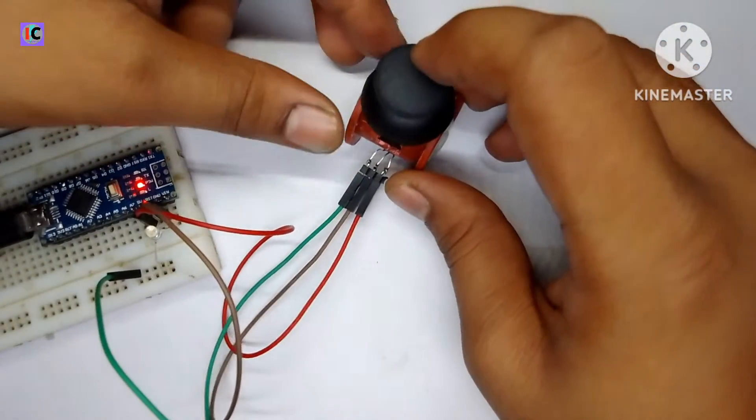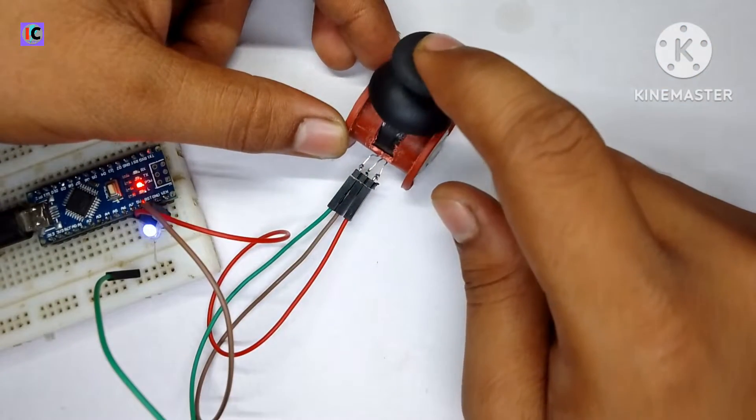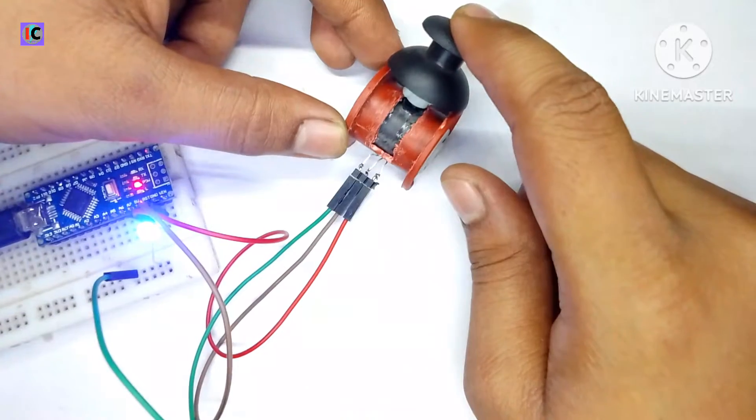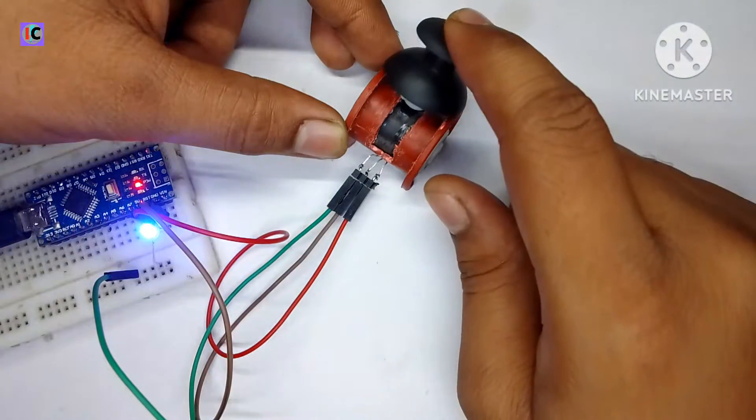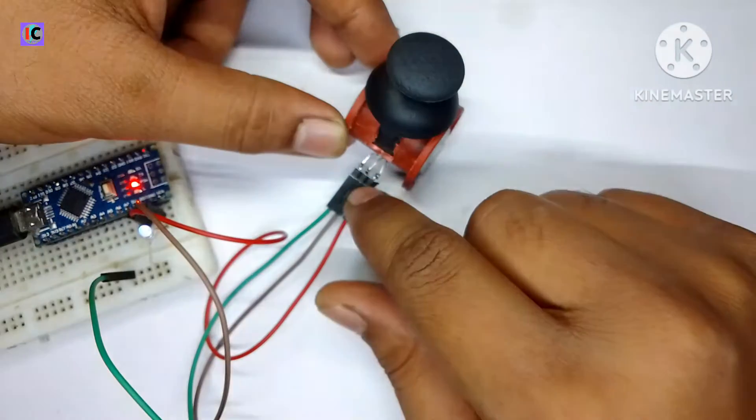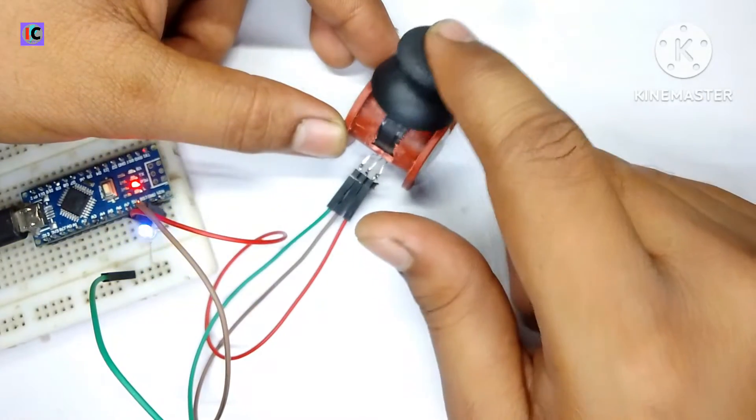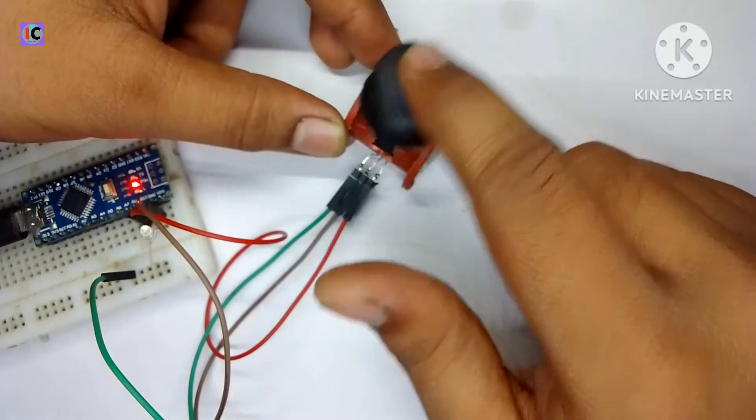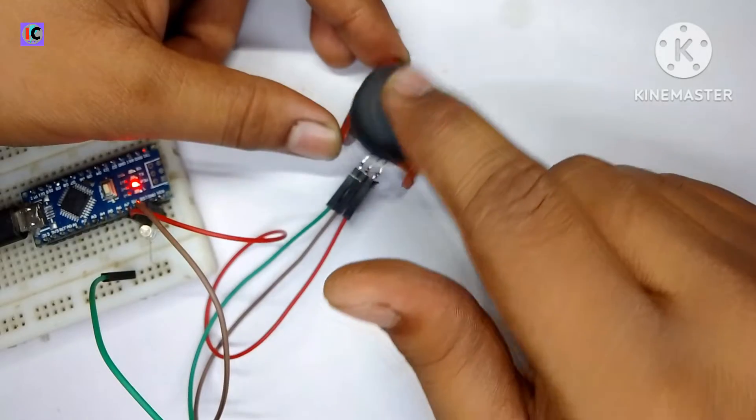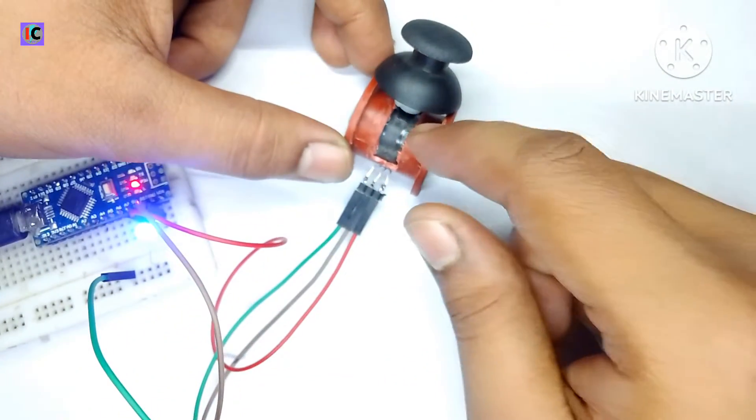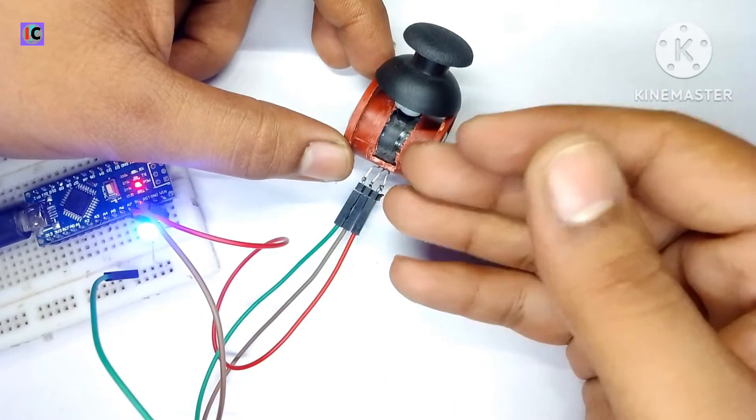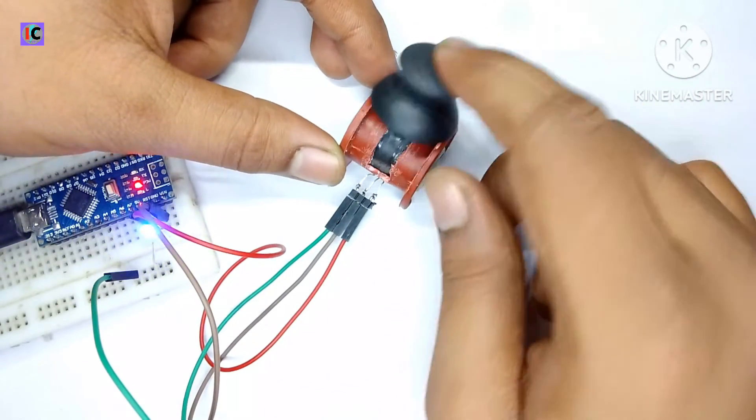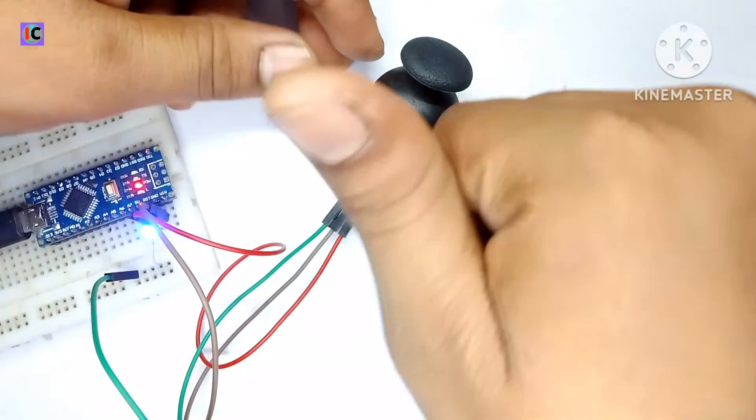As you can see, when I rotate the stick, the LED brightness increases. The output of this sensor is analog and it's very responsive, so you can use this as a throttle for your car or RC plane. Thanks for watching and I'll see you in the next video.